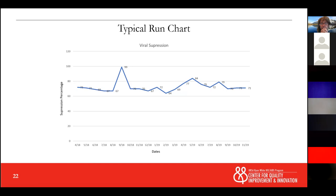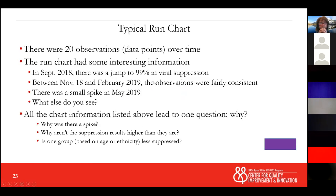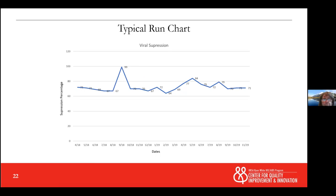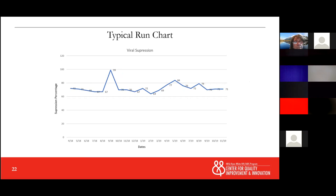The value here is that viral suppression outcomes are all over the place. We had 20 observations, we talked about the jump to 99, and between November and February they were fairly consistent. There's another small spike in May and other things you can see. Looking back at this — does anybody want to tell me what else they see? You can type it in the chat room. Would you say it's consistent or inconsistent results?